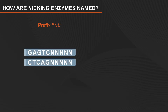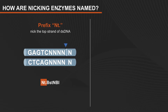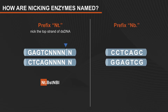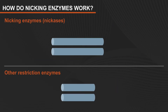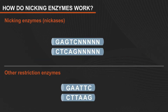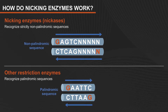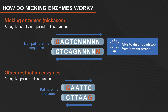Enzymes prefixed by NT, such as NT-BSTNB1, will nick only the top strand, while enzymes prefixed with NB, such as NB-BBVC1, will nick only the bottom strand. Similar to other restriction enzymes, a nicking enzyme recognizes a specific DNA sequence and cleaves. Nickases recognize strictly non-palindromic sequences, hence their ability to distinguish the top from the bottom strand.